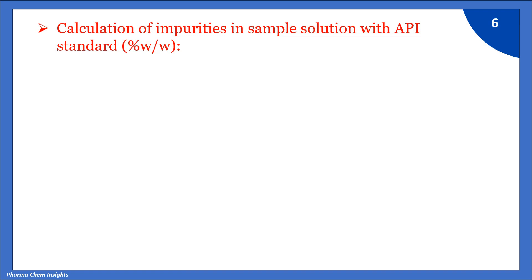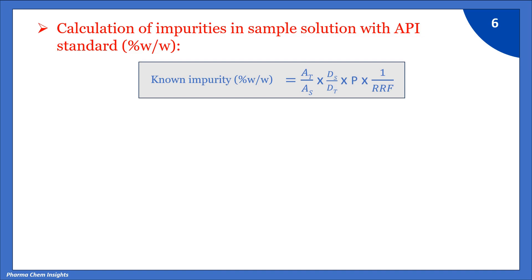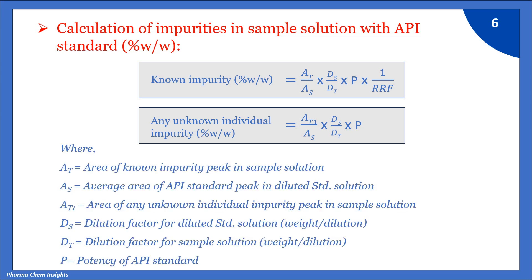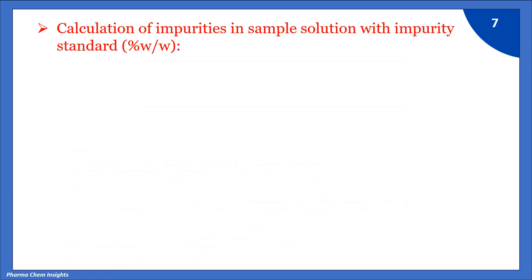The second method is calculation of impurities in sample solution with API standard, expressed as percentage weight by weight. The formula for known impurity (% w/w) is: (At / As) × (Ds / Dt) × P × (1/RRF). For any unknown individual impurity (% w/w): (Ai / As) × (Ds / Dt) × P. Where At is area of known impurity peak in sample solution, As is average area of API standard peak in diluted standard solution, Ai is area of any unknown individual impurity peak in sample solution, Ds is dilution factor for diluted standard solution (weight divided by dilution), Dt is dilution factor for sample solution, and P is potency of API standard.